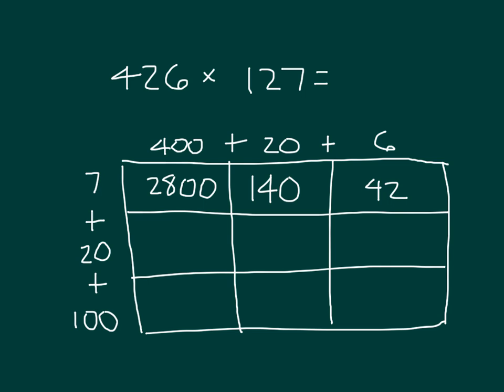20 times 400, that's 2 times 4, which is 8, and then we're talking about 10 hundreds, which is 1,000. So we have 8,000. 20 times 20, that's 2 tens times 2 tens, 2 times 2 is 4, and that's actually 400. 20 times 6, which is 120.